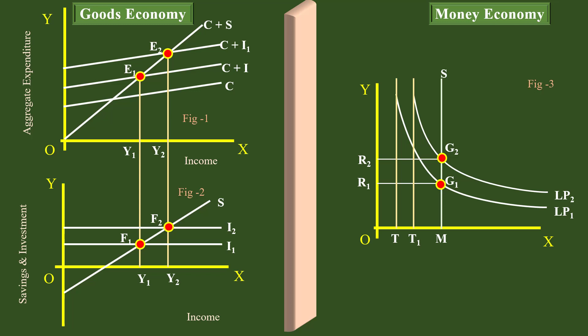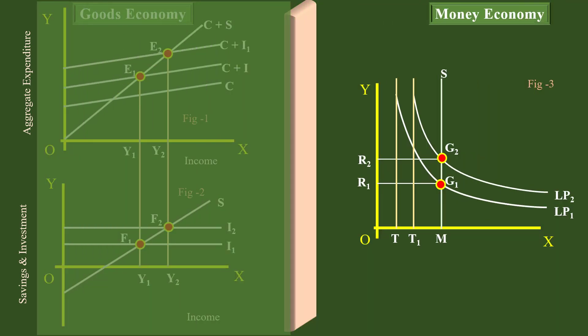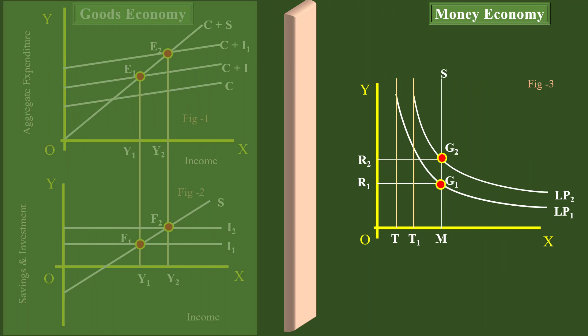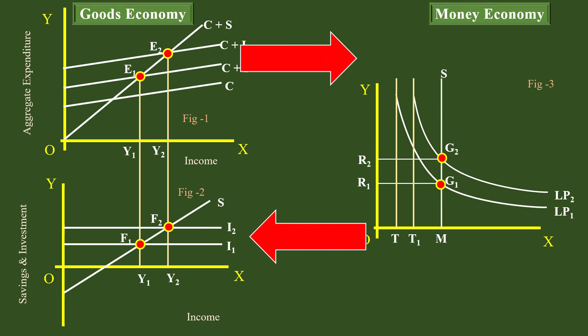When they deal with goods economy, they assume money economy variables are constant. And when they speak about interest determination, they assume goods economy variables are constant. With this basic understanding, we shall proceed to discuss the need for the IS-LM model, which very well understands the interdependence of these two economies and attempts to combine these two theories.